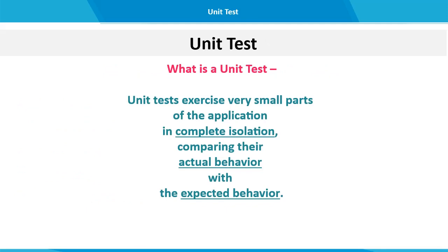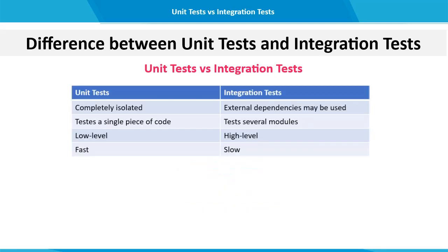Unit testing is one of the most valuable types of automated testing. Unit testing is carried out on a very small part of the application in complete isolation. Here we compare actual behavior with the expected behavior. Complete isolation means we do not connect the application with external dependencies, such as databases, file systems or HTTP services.